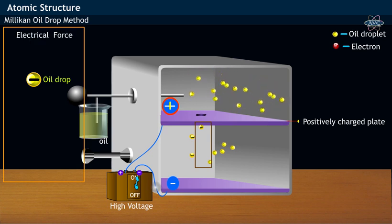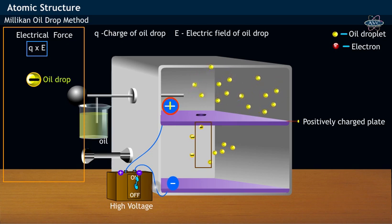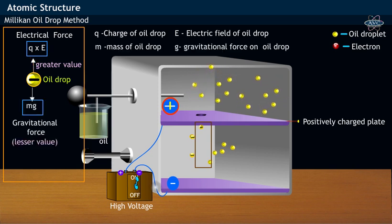This is because the electric force, which is the product of charge and electric field on oil droplet or q × E, which is pointing upwards, is greater than the gravitational force mg acting in the downward direction.